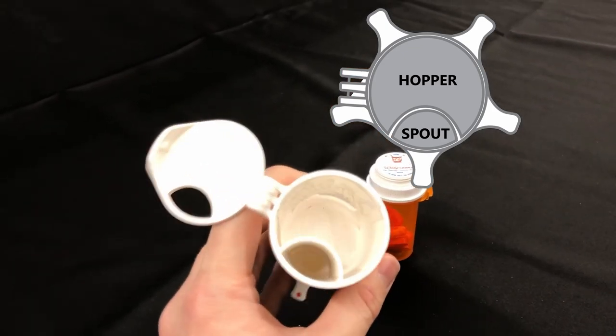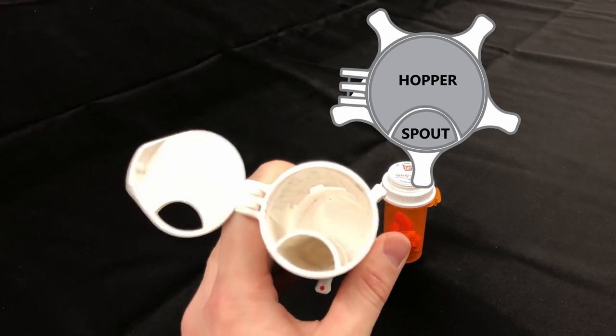The smaller opening seen at the bottom is the spout. When dispensed, pills will exit through this tube.